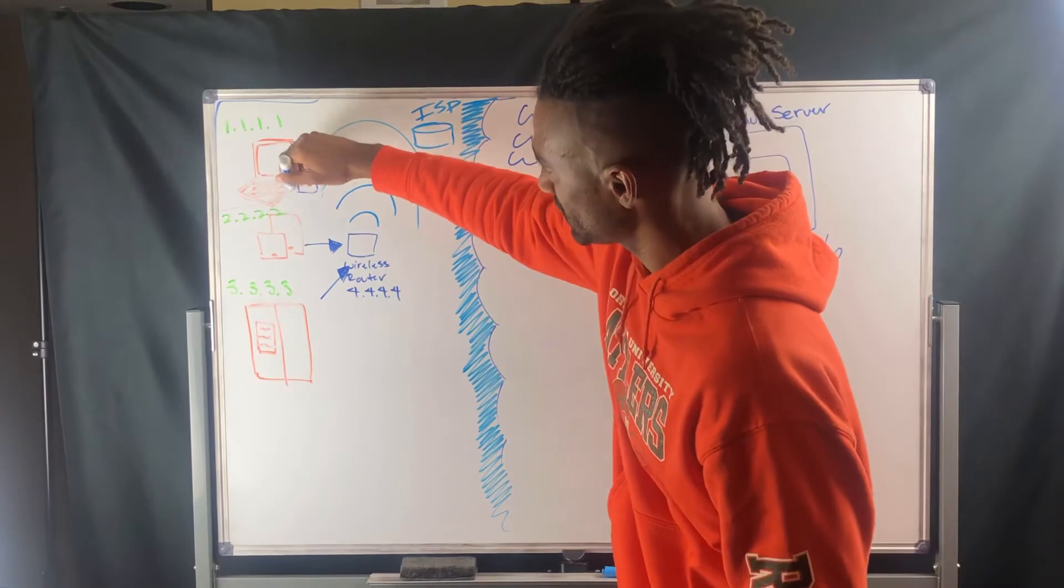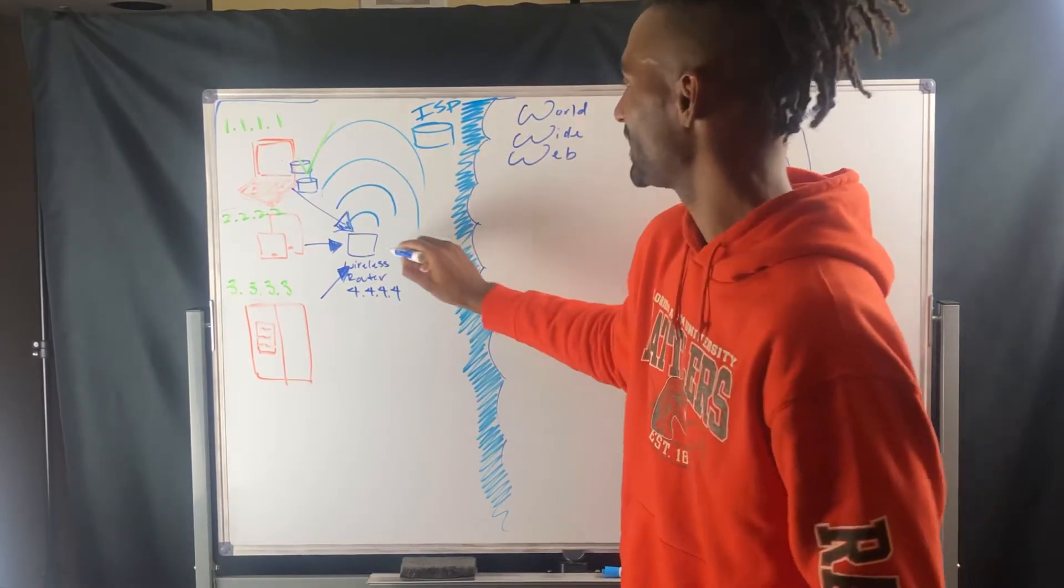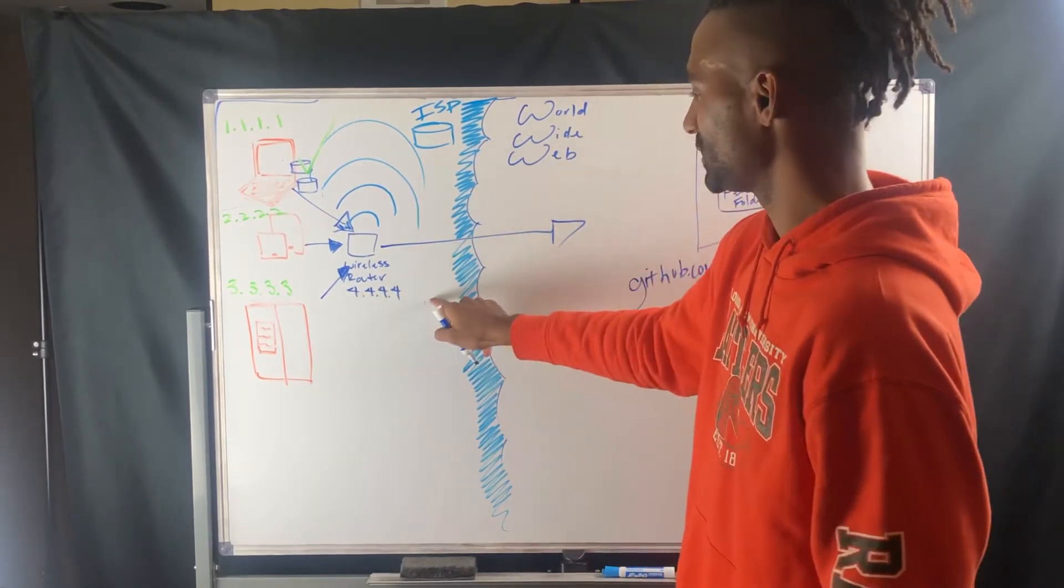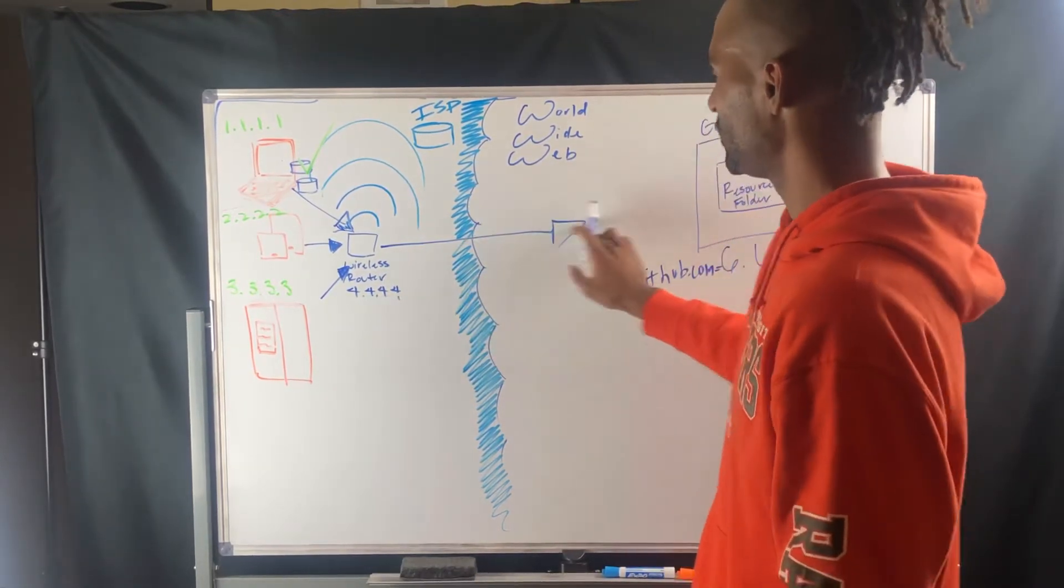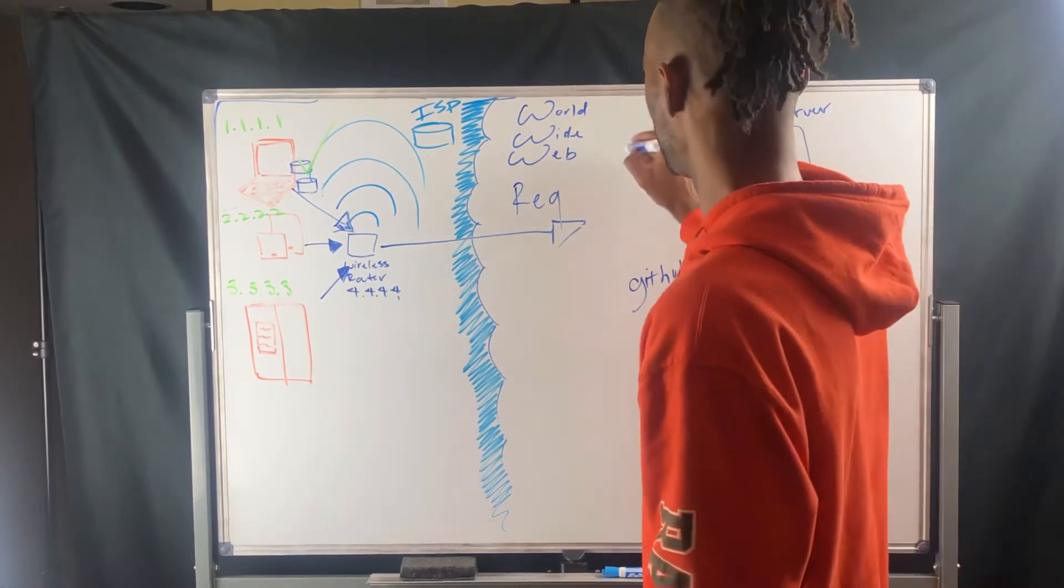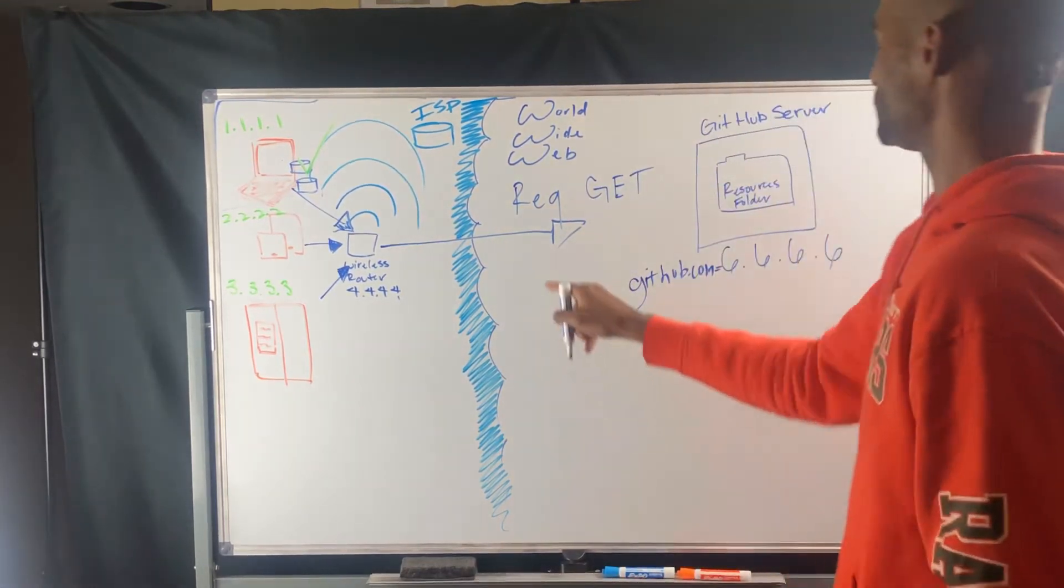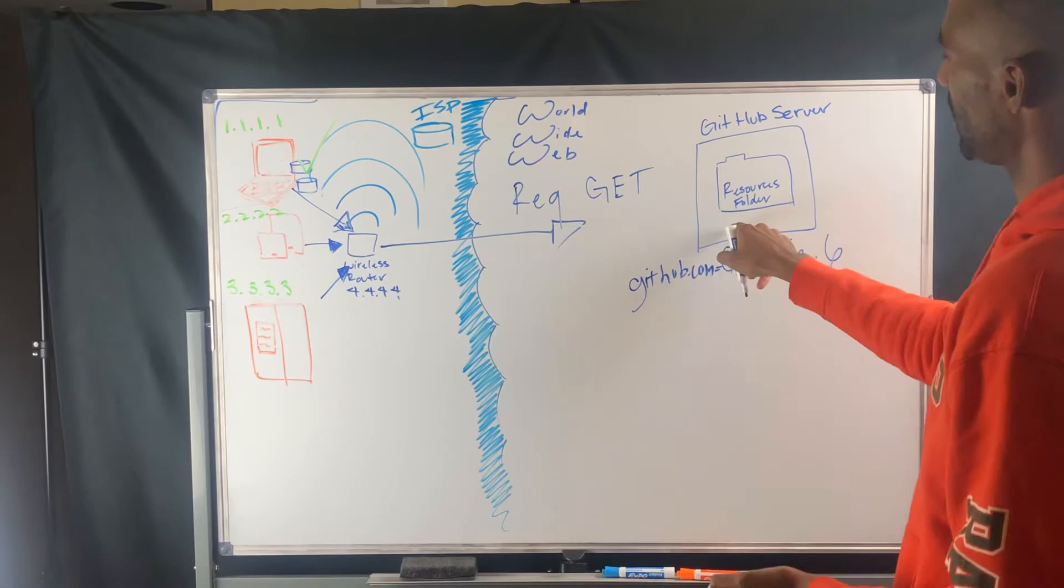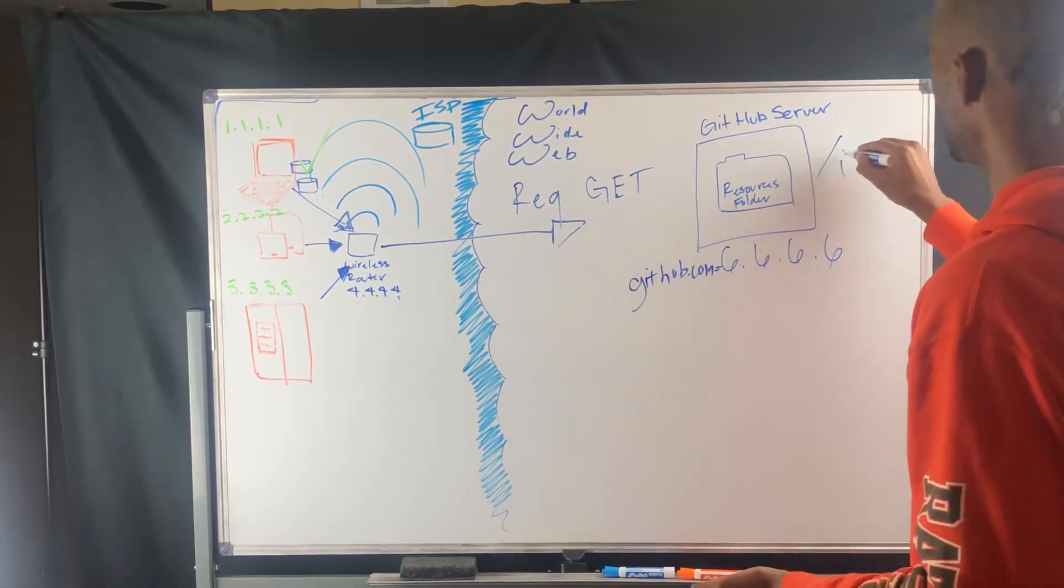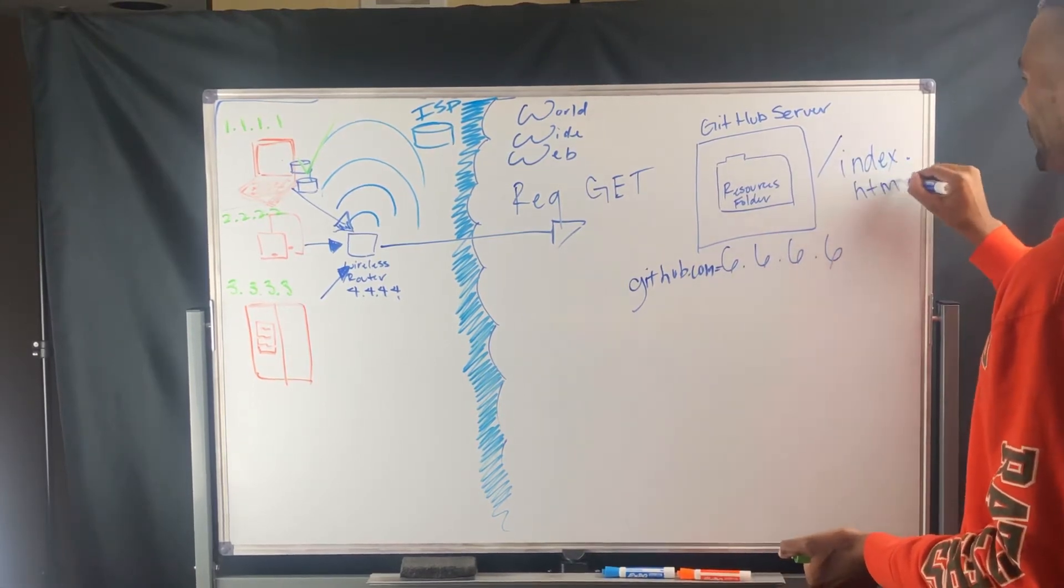So now we can make that GET request through our wireless router. Our wireless router will make that request on our behalf, and it's going to have this host, this IP address associated to this request. So now we're making a GET request. We're using the GET verb to get a resource from this server. We're getting the root directory of the server, so we're going to request the index.html file.